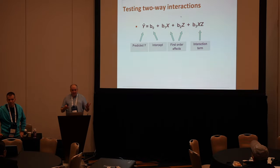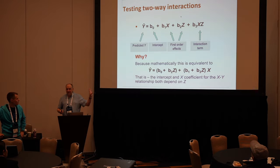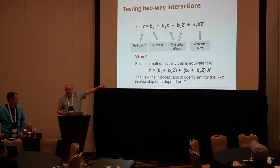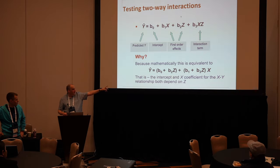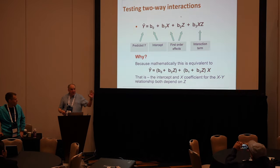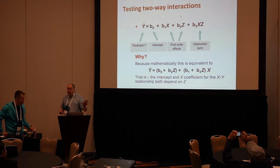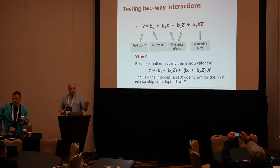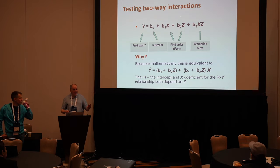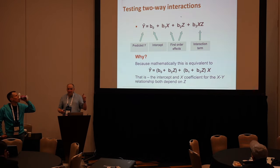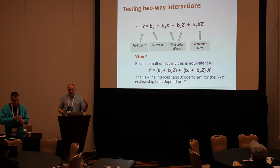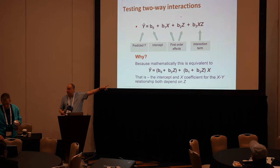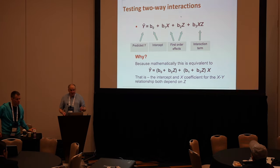Why is this? Well, if we rearrange that equation we can make it look like this: it is a relationship between Y and X where the intercept is given by B0 plus B2Z, and the slope is given by B1 plus B3Z. So both the intercept and the slope are themselves dependent on the variable Z — the moderator. Therefore, if Z has different values, both the intercept and slope take on different values. In particular, if coefficient B3 is non-zero, that means there is some way in which the slope changes as Z changes.